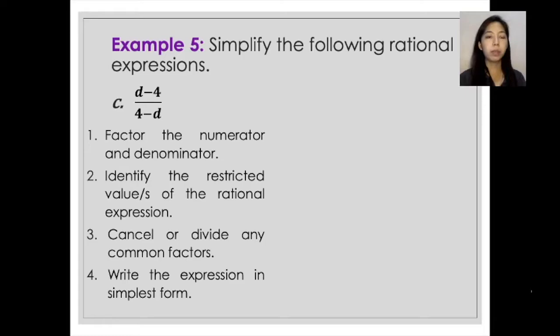So in this case, notice that you can factor out something in the denominator. You can get the negative 1 as the common factor in the denominator. So it would now turn into negative 1 times the quantity of negative 4 plus d.